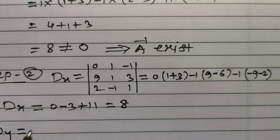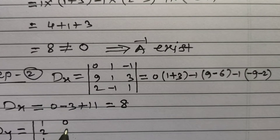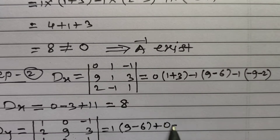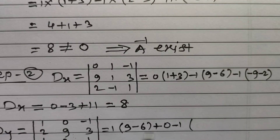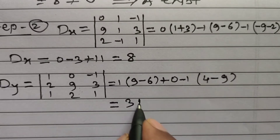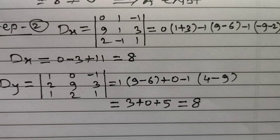Now let us find Dy, where Dy is the determinant obtained from det(A) by replacing the second column with the column matrix of constants. So the first column stays as 1, 2, 1; the second column becomes 0, 9, 2; and the third column stays as minus 1, 3, 1. Expanding and simplifying: 1 into (9 minus 6) plus 0, minus 1 into (0 minus (4 minus 9)), gives 3 plus 0 plus 5 equals 8. So Dy is also 8.